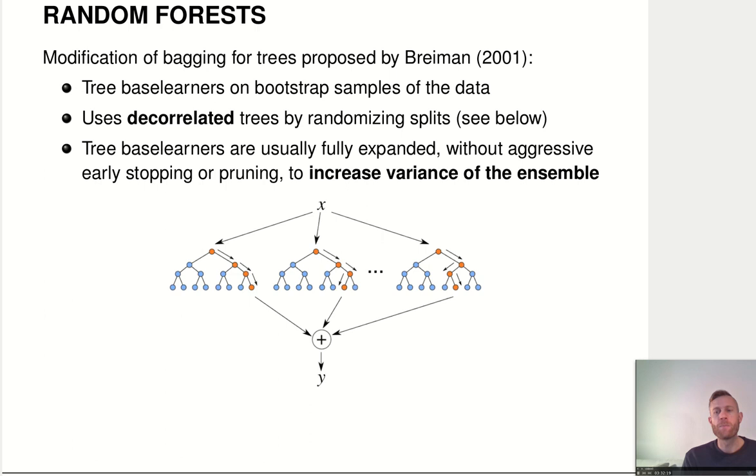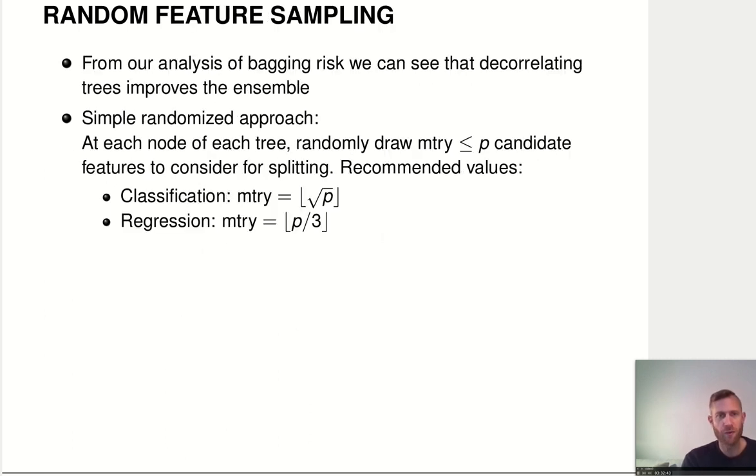And the second thing we saw was when does bagging help? Bagging helps if the base learners' predictions are not too strongly correlated. So, we want to build decorrelated trees that are more independent in what they predict. And the question is how do we do that?